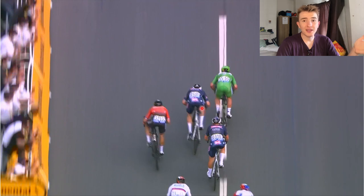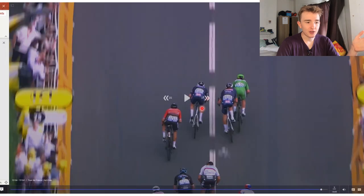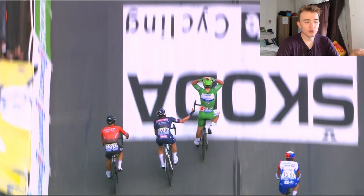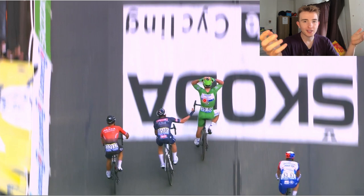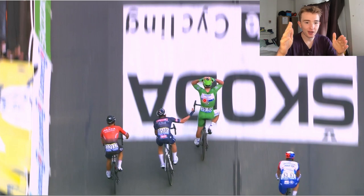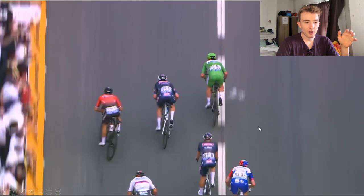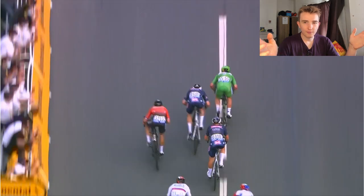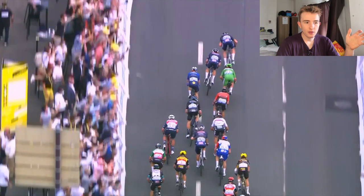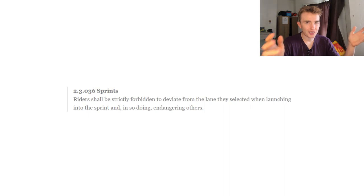I just think you either have to be consistent and apply the rule — if you deviate from your line, which Cav clearly has (we literally have a white line), then he has to be disqualified. You can see Philipson's protests at the end because he knows Cav cut straight across him and forced him to stop pedaling for one pedal stroke. At 65k an hour, if you stop pedaling for even one pedal stroke, the deceleration means you're never going to come past him. He starts on one side of the line and ends up on the other — that's not straight, that's against the rules, and he should be relegated to last in the main group.